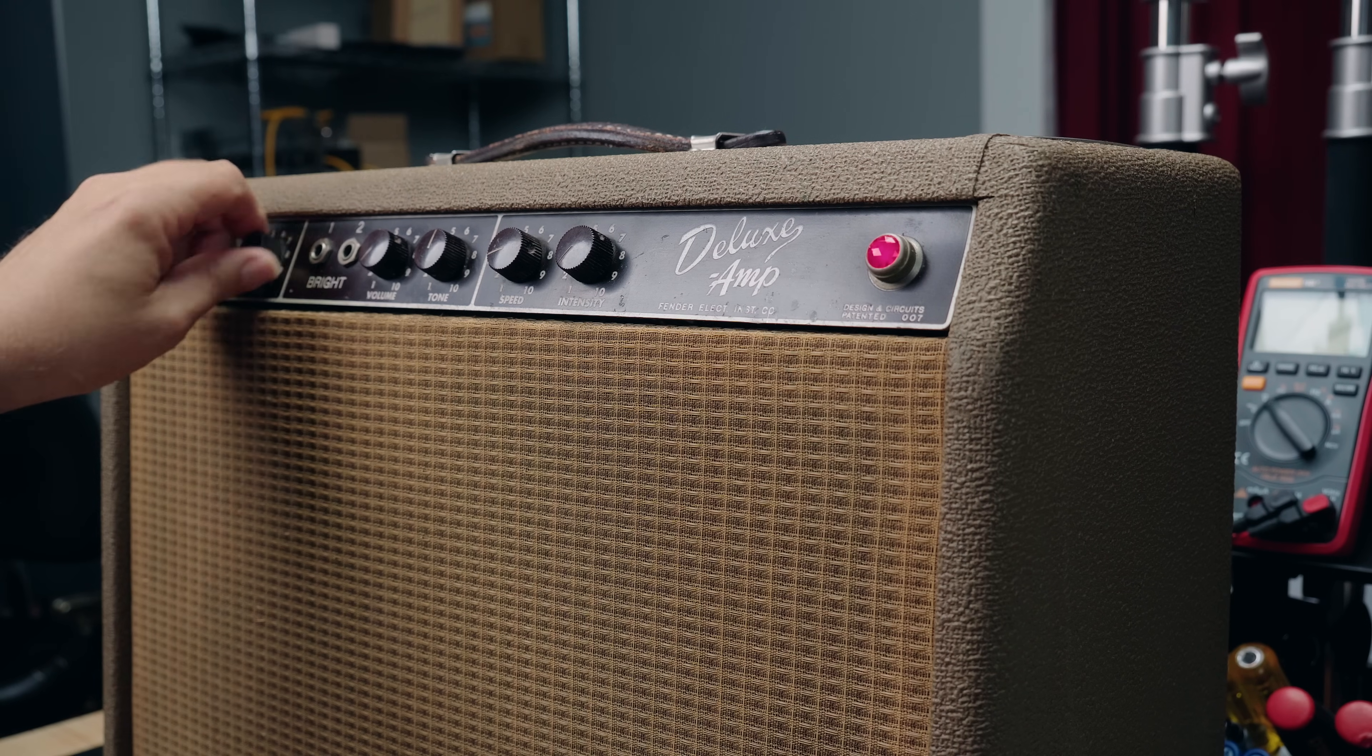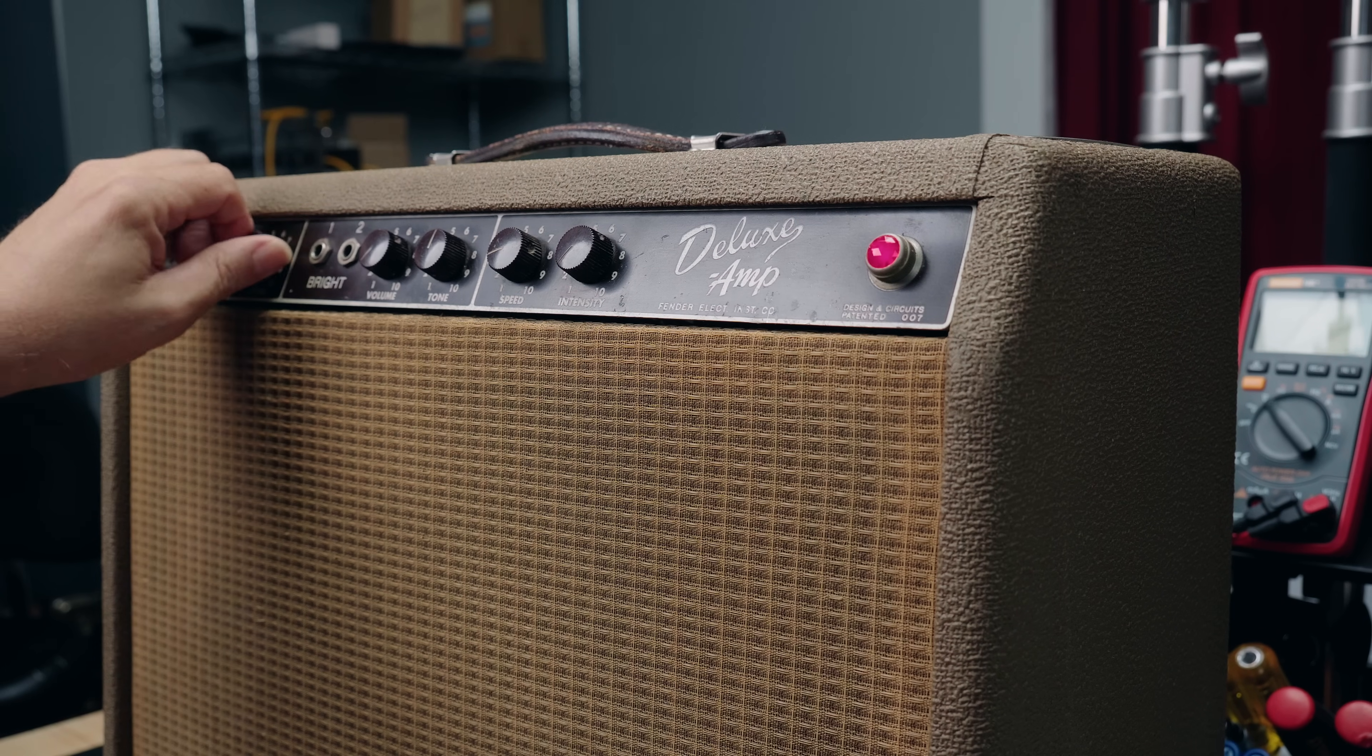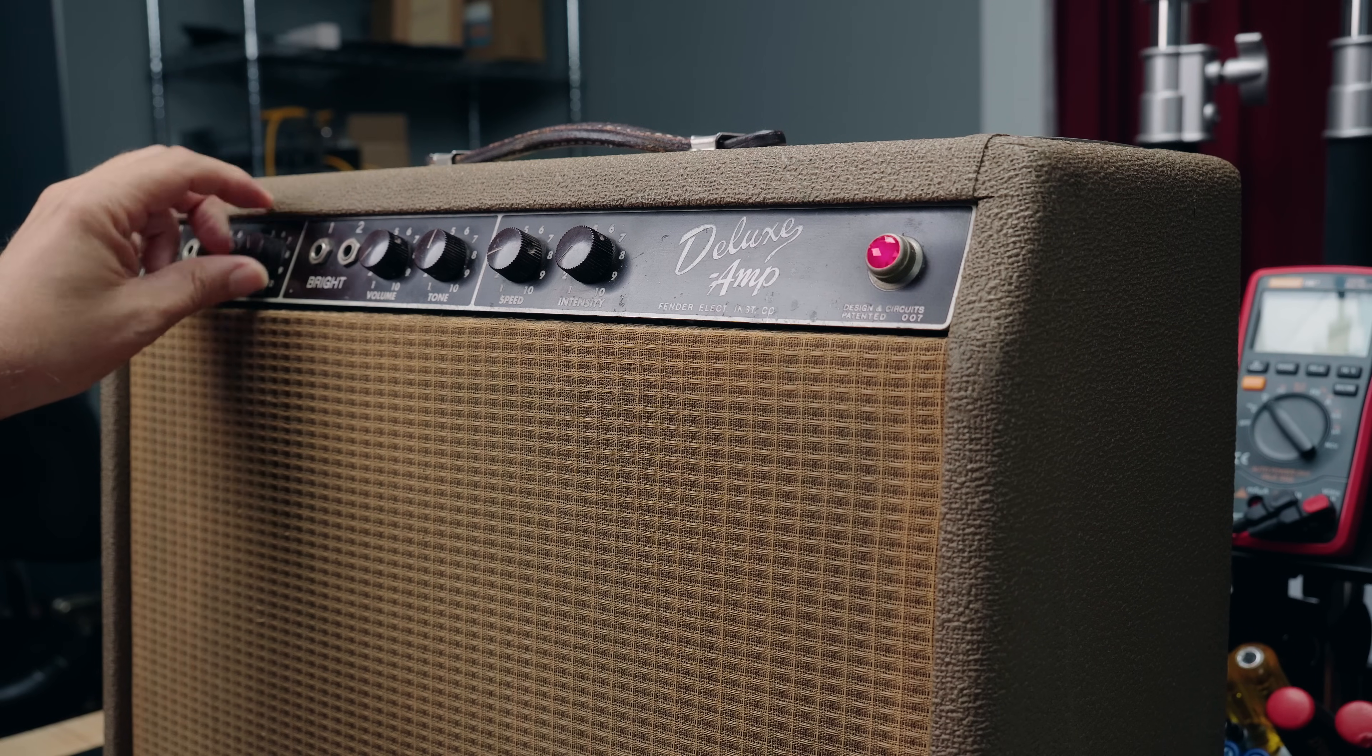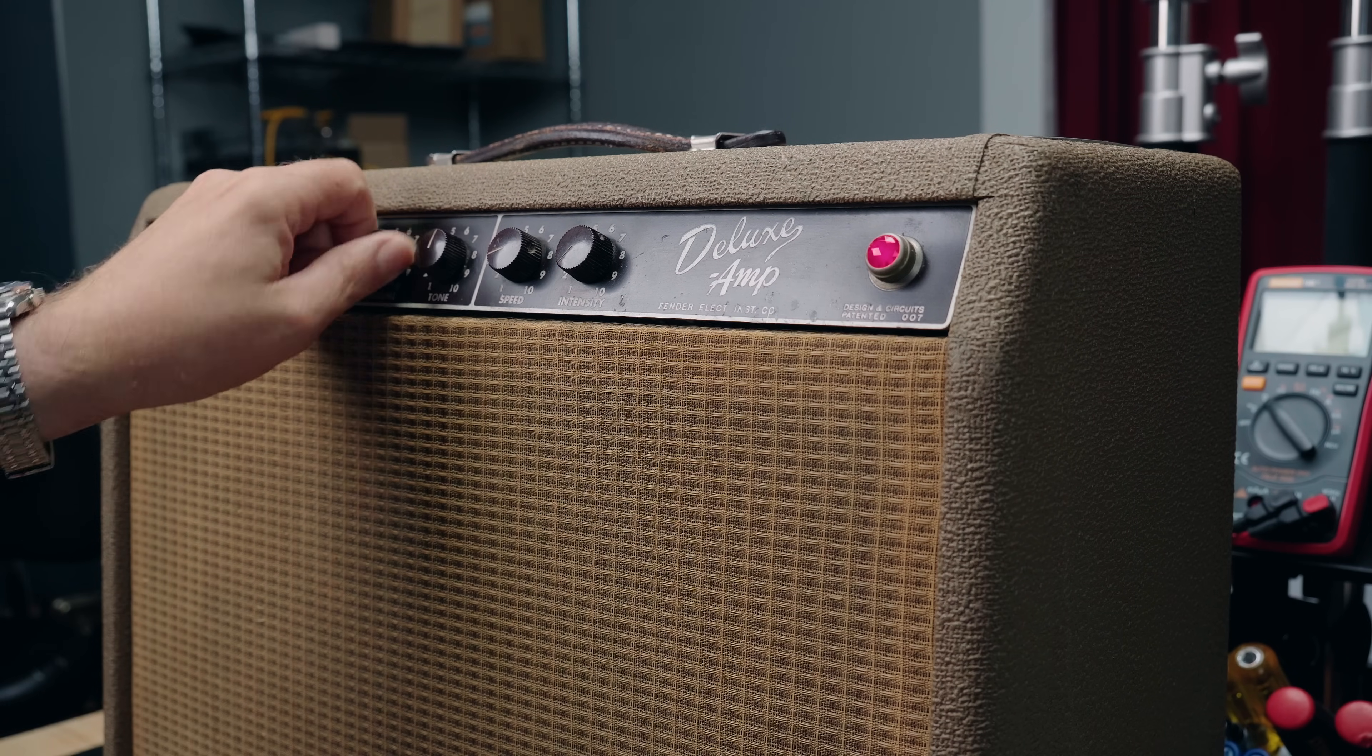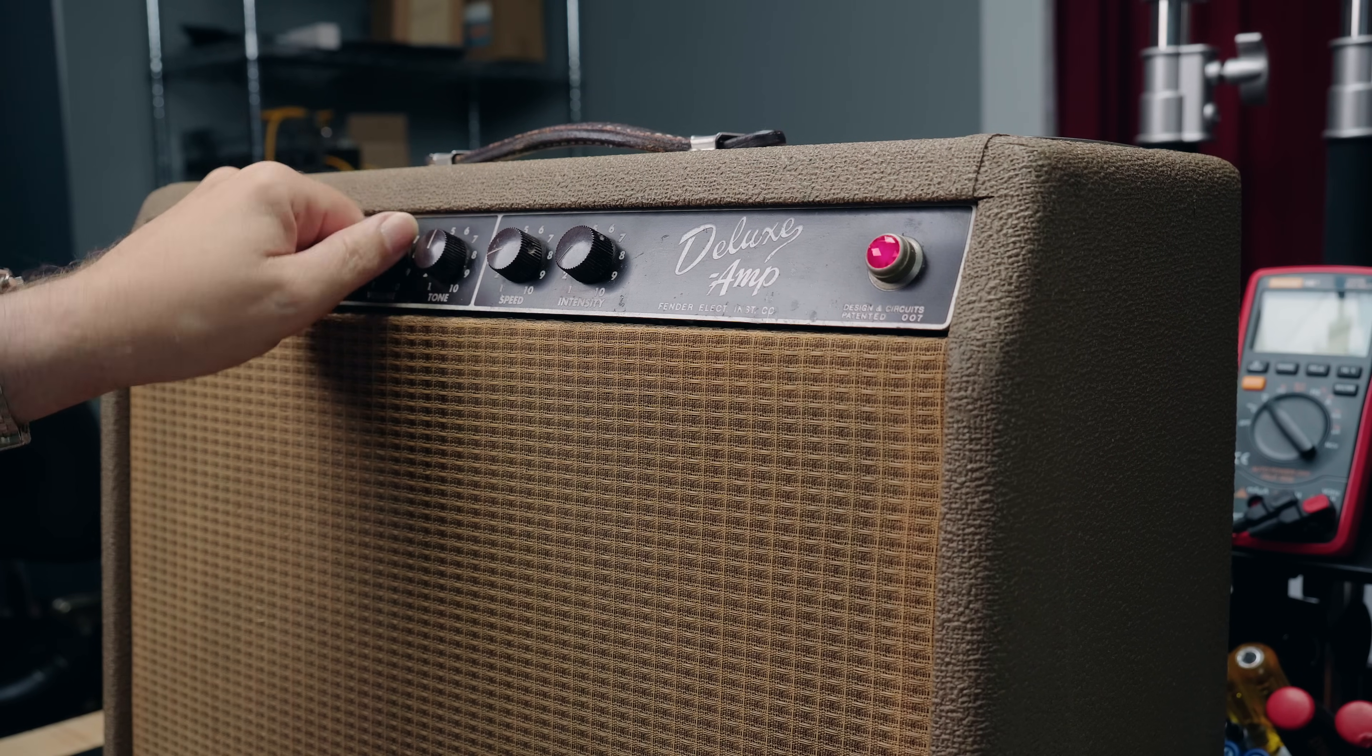That pot probably needs a little bit of cleaning. It may clean itself just by me turning it a few times like this. I don't always have to use deoxit or other cleaning solvents. I tend to use fader lube more than D5 on pots, but I always prefer just to turn them a few times first.